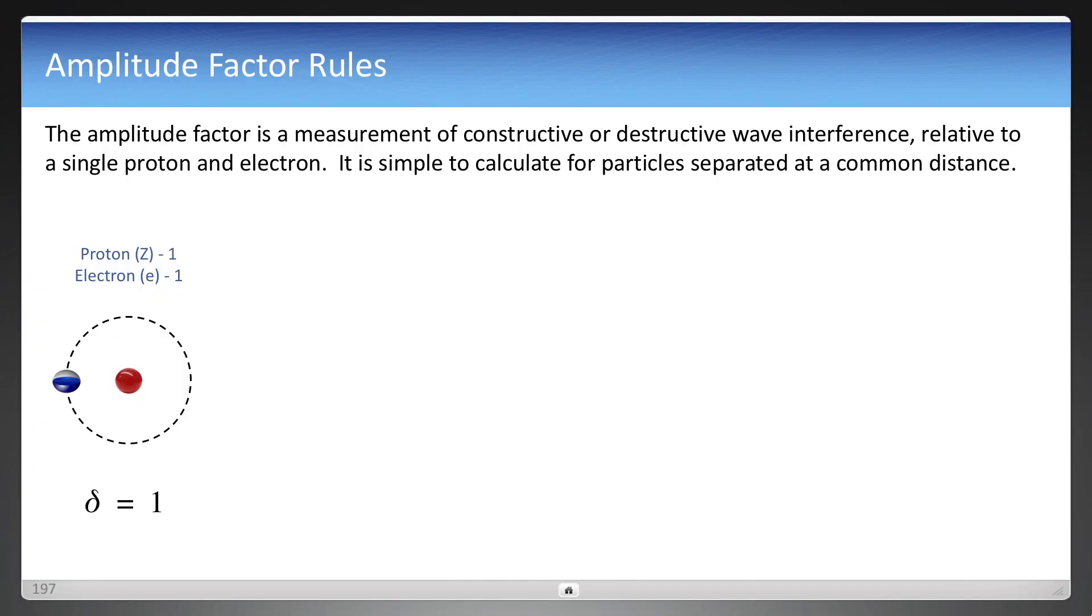Okay, what is the amplitude factor variable? It's really a measurement of constructive and destructive wave interference relative to a single proton and electron, because this is stable. And this really changes based on that stability which is being measured.